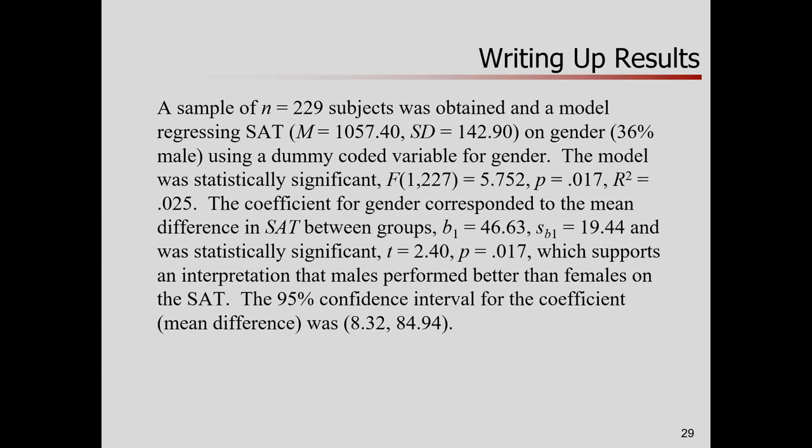Let me just quickly wrap up this portion of things. Here's how I would write things. It's kind of a typical regression-y paragraph. Sample. I got a model regressing the outcome. Descriptive statistics on a predictor. Descriptive statistics for gender is, well, it's more of a proportion or percentage. Using dummy-coded, the model was significant. F-test, p-value, r-squared, teeny-tiny. The coefficient, I'll tell the reader, is the mean difference. And there it is. Standard error, statistically significant, which supports the interpretation that males perform better than females on the SAT. And I'll give you a 95% confidence interval for that slope, which is also the 95% confidence interval for the difference in means.